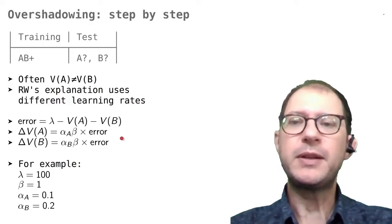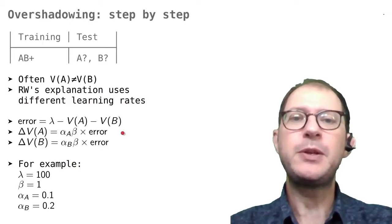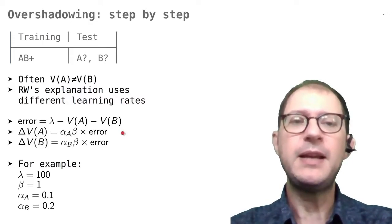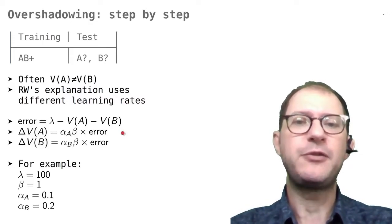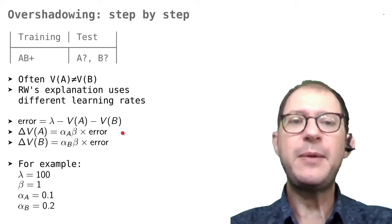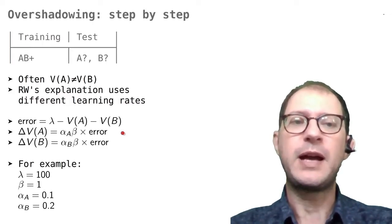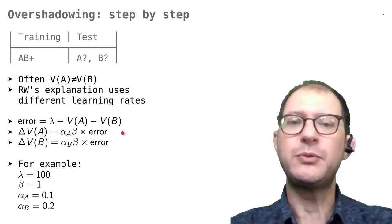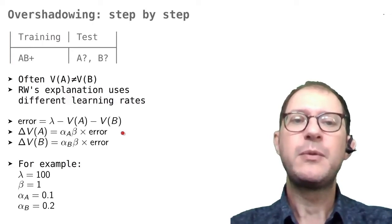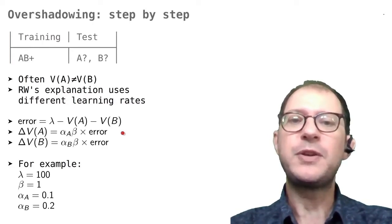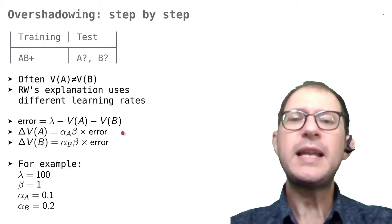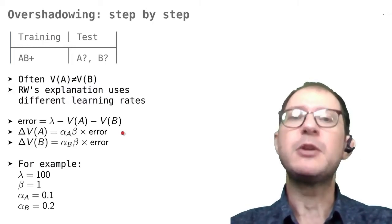The whole model is in these three equations, and for this example I will use a value of 100 for lambda, a value of 1 for beta, just to make things simple, and then I will use a value 0.1 for alpha A and 0.2 for alpha B. We know from our previous lesson on learning speed that this means that learning about B will be twice as fast as learning about A. Let's see why this ends up causing overshadowing.